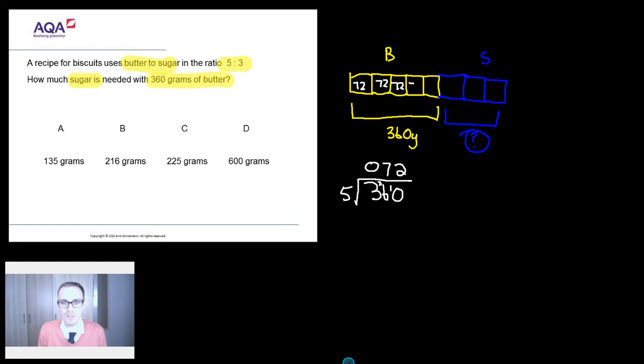But here's the beauty of it. If you know those bits are 72 grams, you also know that the sugar bits are 72 grams as well. So now when the question says how much sugar in total, well, it's just 72 times 3.